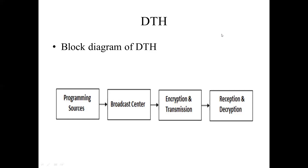It is used to provide DTH service in highly populated areas. A multi-switch is basically a box that contains signal splitters and A/B switches. The outputs of a group of DTH LNBs are connected to the A and B inputs of a multi-switch.